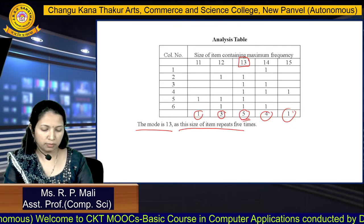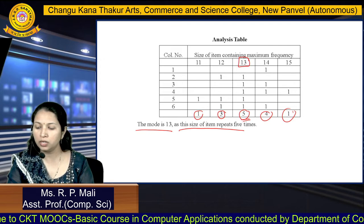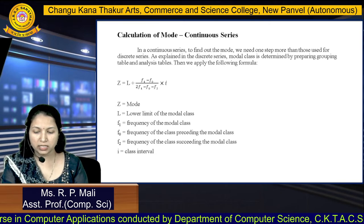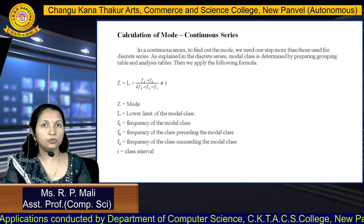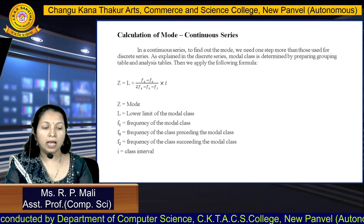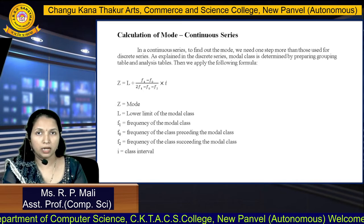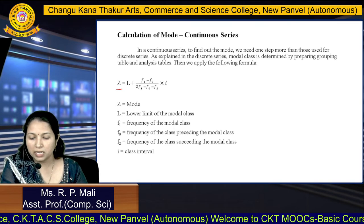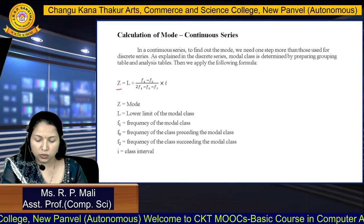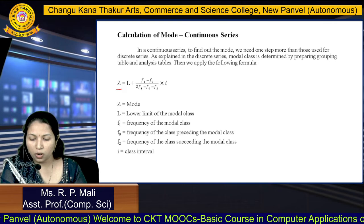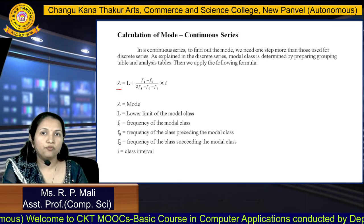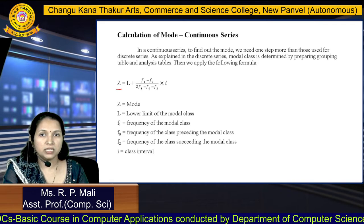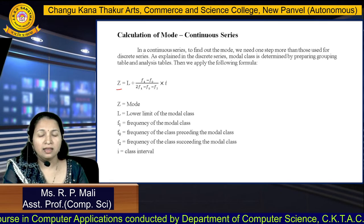This is how you find the mode for your discrete series. Then we are going to find the mode for your continuous series. For the continuous series, we again draw the grouping table and analysis table. But after preparing your analysis table, we apply this formula: Z equals L plus (F1 minus F0) divided by (2F1 minus F0 minus F2) into I. Where Z is your mode, L is the lower limit of the modal class, F1 is the frequency of the modal class, F0 is the frequency preceding the modal class, F2 is the frequency succeeding the modal class, and I is the class interval.